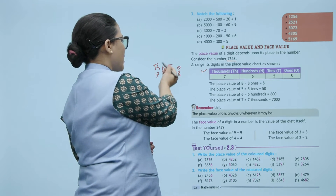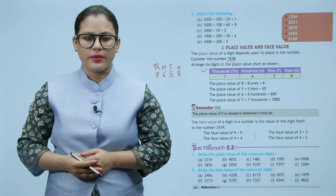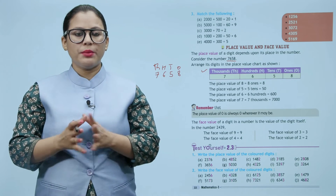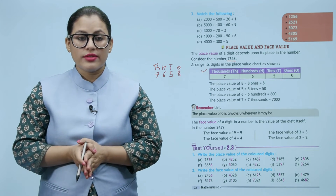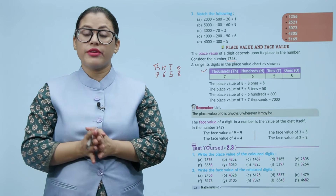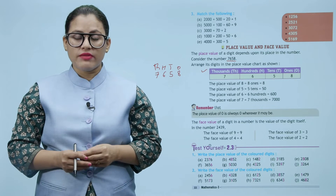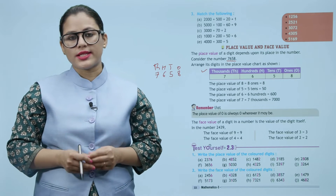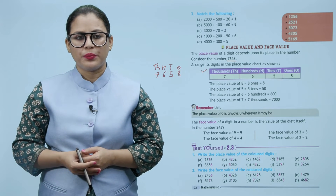Place value depend karta hai kisi bhi number ki wo kaunse place pe hai — ones place, tens, hundreds ya fir thousands. Remember that the place value of zero is always zero wherever it may be. Zero ki place value humaysha hi zero hogi, chahe wo kisi bhi place pe kyu na ho.